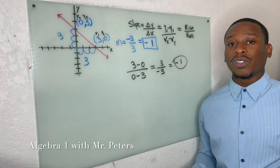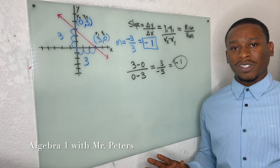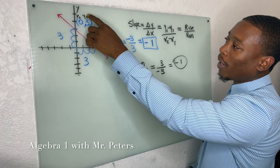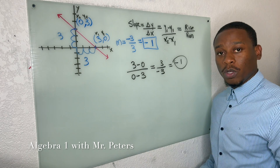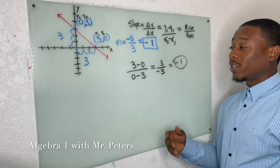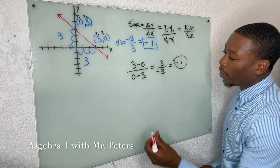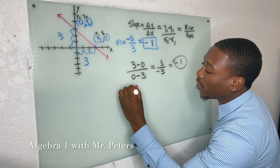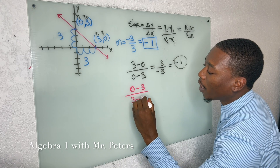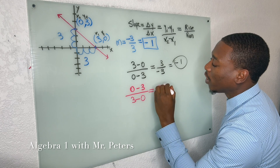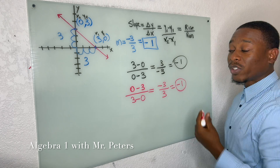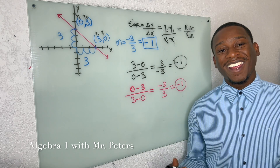Some students ask what happens if we do it the other way — y1 minus y2 divided by x1 minus x2. That's okay; we can definitely do that, and I'll show you we get the same exact answer. When we switch this around, we have 0 minus 3 on top and 3 minus 0 on the bottom, giving us negative 3 over 3. Once we simplify, we still get the same exact answer.